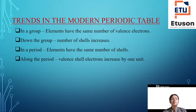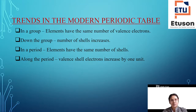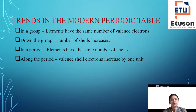Down the group, the number of shells will increase. In a period, the elements have the same number of shells. All elements in a period have the same number of shells. Along the period, the valence electrons will increase.